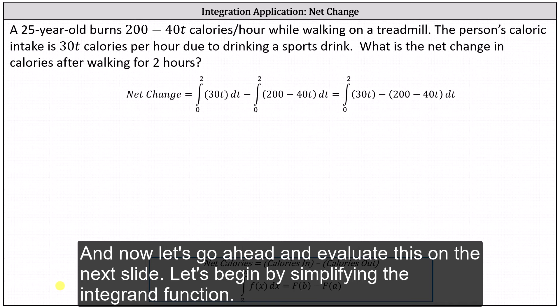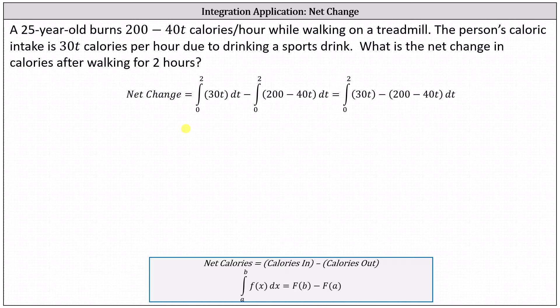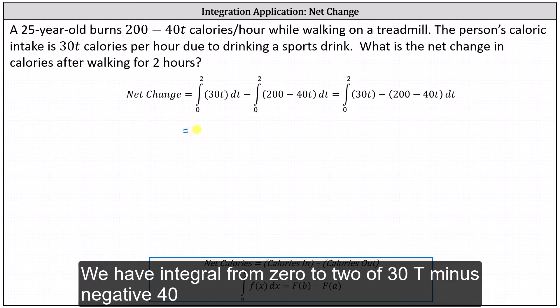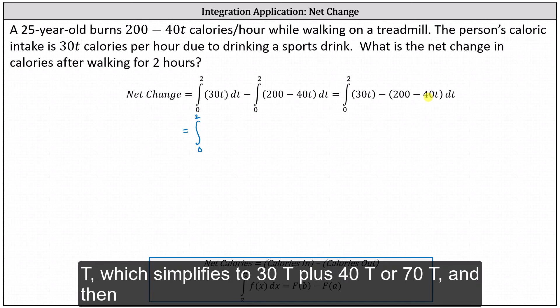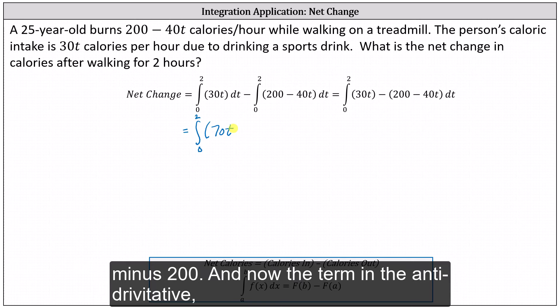Let's begin by simplifying the integrand function. We have the integral from zero to two of 30T minus negative 40T, which simplifies to 30T plus 40T, or 70T, and then minus 200.